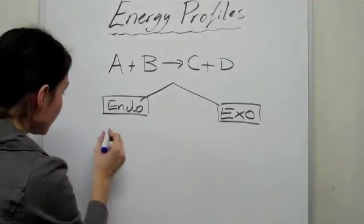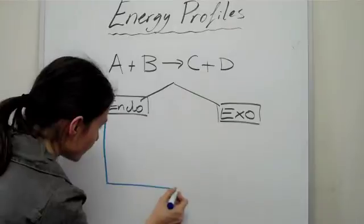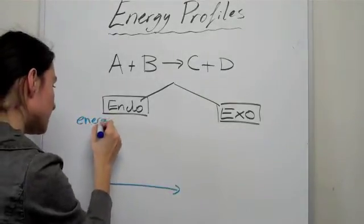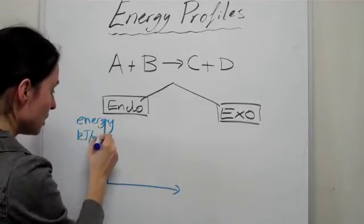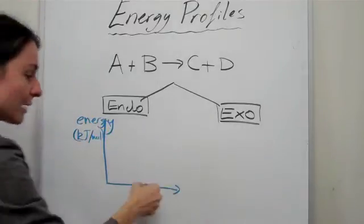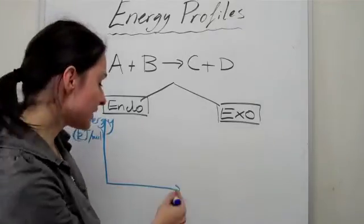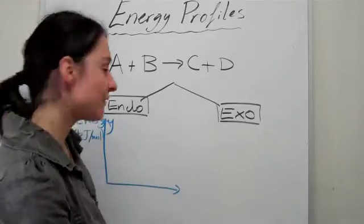An endothermic case, if we draw an energy profile, an energy profile basically shows you the energy here. Energy is generally in kilojoules per mole. And then here on the x-axis, it's actually a reaction pathway. It doesn't really have a unit. You don't really need this, but generally they have it.